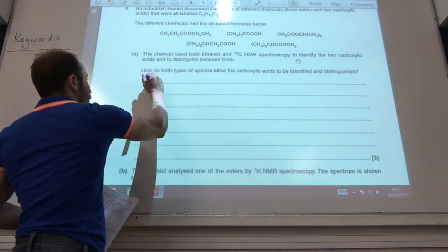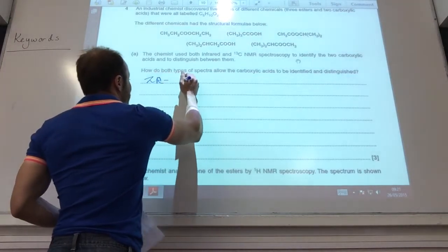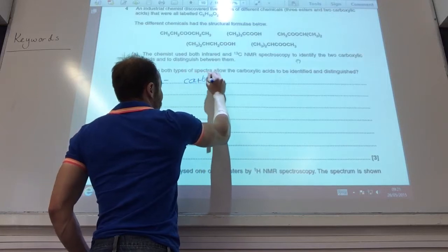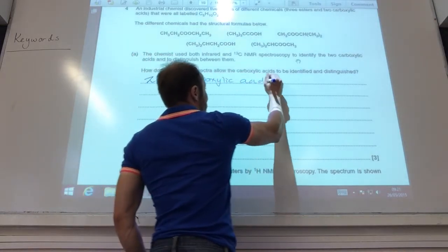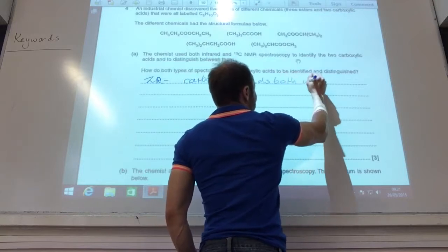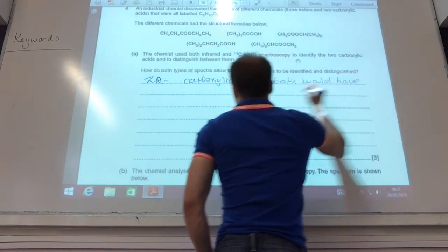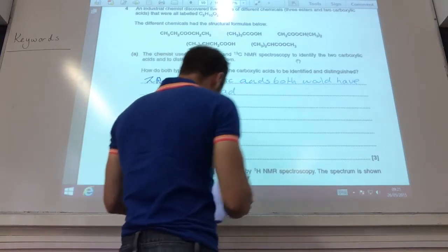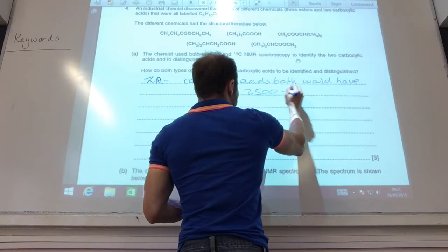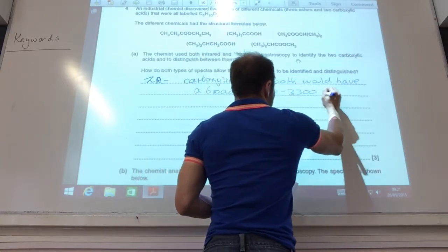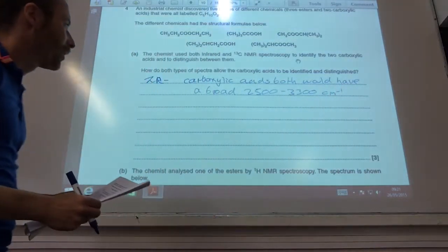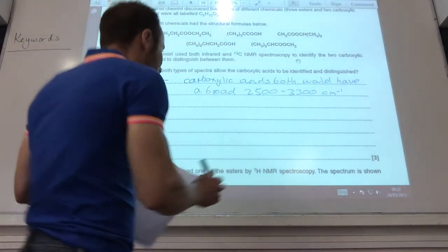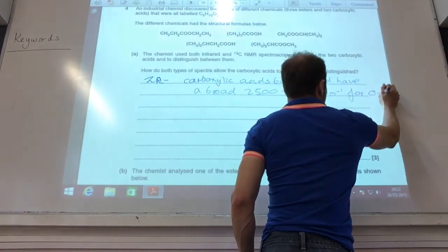Well, the only ones, the carboxylic acids, both would have a broad peak, and if you check out your data sheets, is between 2,500 and 3,300 wave numbers, and that would be for OH.